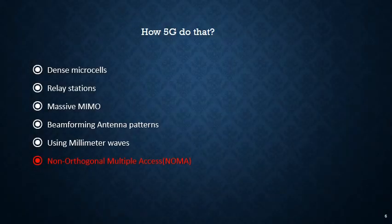How is 5G going to do that? 5G is aiming to satisfy these requirements by using dense microcells — instead of 3 cells in one area, you use 10 cells, and the whole spectrum is allocated to each cell. We also have relay stations, which are radio stations that receive radio signals and retransmit them in order to extend their range.